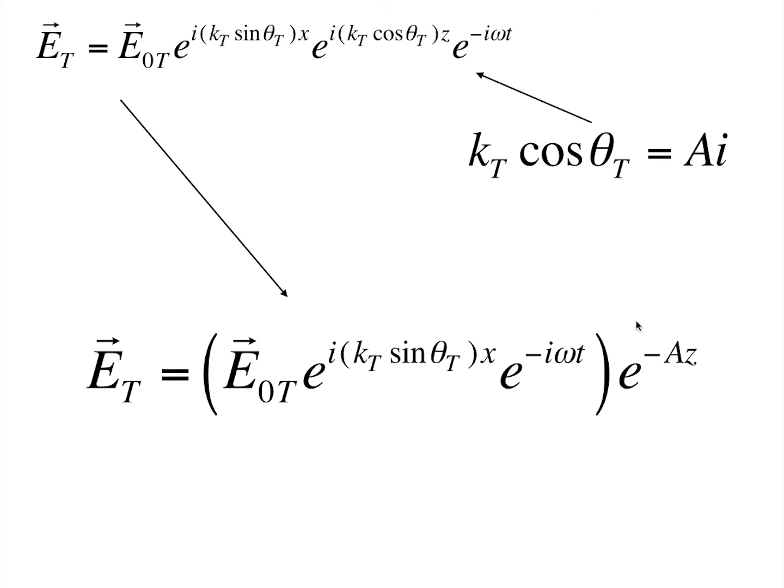which means that et is exponentially decaying. Rather, since it's a real number, e naught t times e raised to minus az will result in the amplitude, which means the amplitude of the electric field is decaying with respect to the z vector.